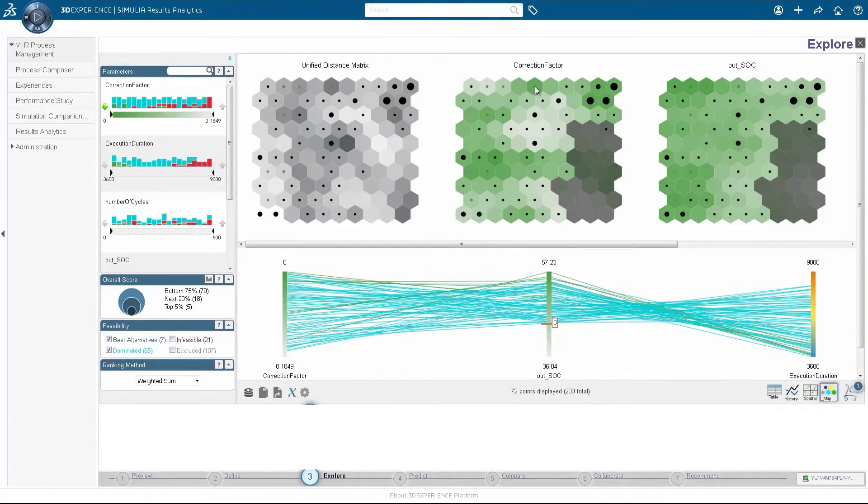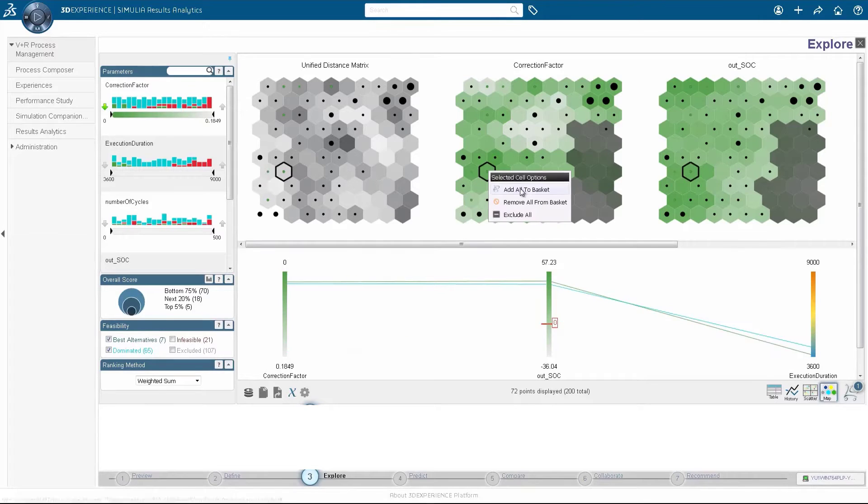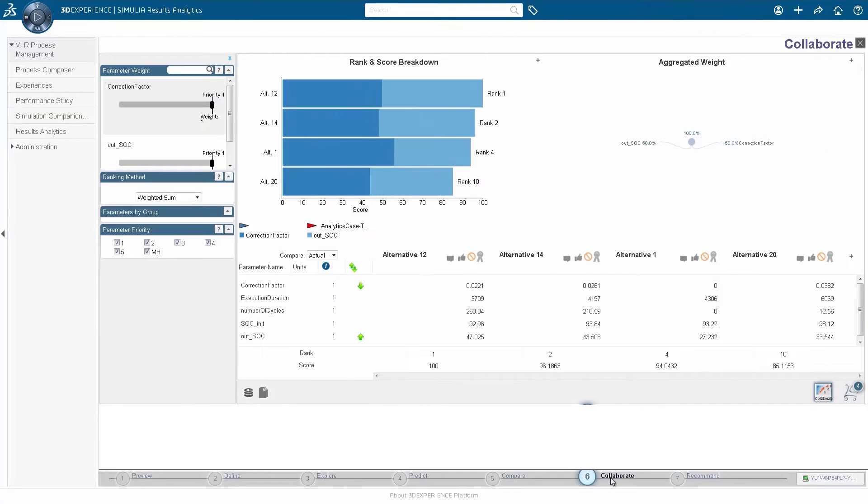Built-in design exploration and optimization makes it possible to study hundreds or thousands of alternatives and narrow down the design space. This helps produce the optimum product that meets or exceeds the safety, performance, and cost requirements.